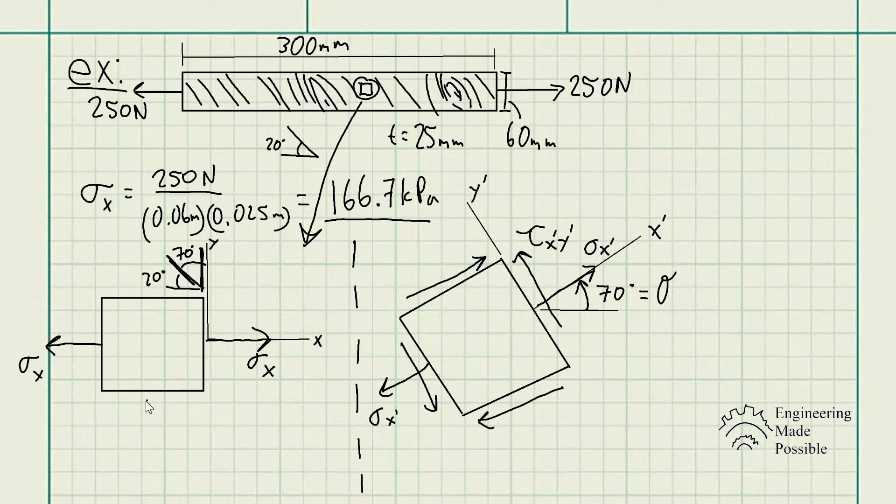Now we're going to use the equations previously shown. We know from the original rotation we have no normal stresses along the y direction, so sigma y is equal to zero, as well as tau xy is also equal to zero. Keep this in mind when calculating the new normal and shear stresses of this orientation of the element.